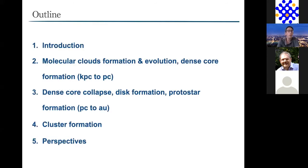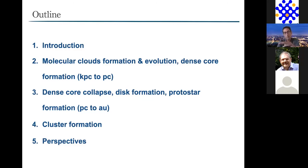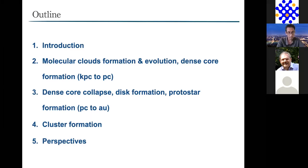The outline of my talk is as follows. First I will introduce the context, then describe the challenges when studying star formation at small scales. Then I will speak about molecular cloud formation, evolution, and dense core formation, covering scales from kiloparsec to parsec. Then I will focus on smaller scales—the collapse of dense cores and the formation of the protostellar disk and the protostar itself, covering scales from parsec to AU. I will briefly speak about cluster formation and finally give some perspective on what models will do in the coming years.